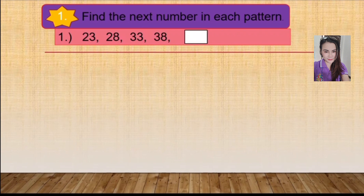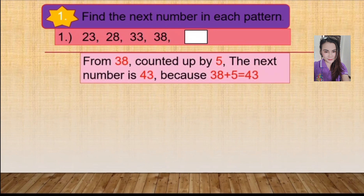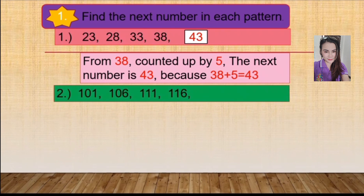Next, we need to find out what number goes in the blank. We will write in this form: from 38 counted up by 5, the next number is 43, because 38 plus 5 equals 43. So the answer in the blank is 43. Next, in number 2: 101 counted up by 5 — you can practice by counting your finger — equals 106.